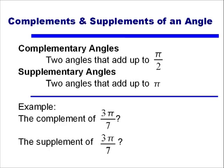So if I have an angle of 3π/7 and I want to know its complement, I will subtract it from π/2. So π divided by 2 minus 3π/7, I think our common denominator will be 14, and that leaves us with a complement of π/14. So the complement of 3π/7 is π/14. If we added those two angles together, we'd get back to π/2.